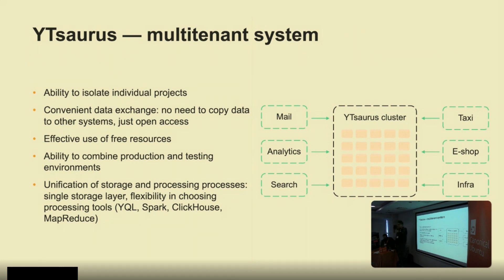In a large company with lots of different data, one team preparing data can do it only once, then easily open access to that prepared data to different teams without needing to copy it to another system or different clusters. We have different processing engines like YQL, Spyt, and Cheat, so everyone can choose the engine they like. If you want to write in Python, use Apache Spark. If you prefer SQL, select ClickHouse or YQL.